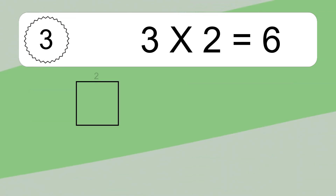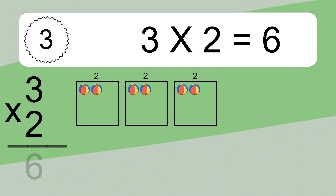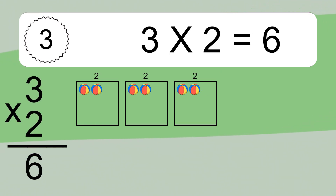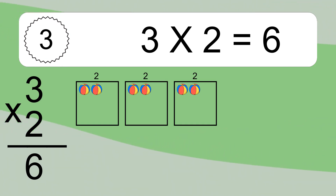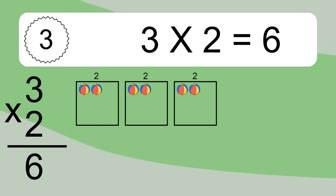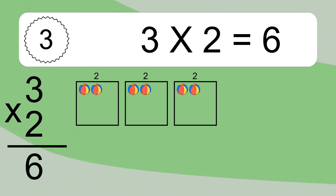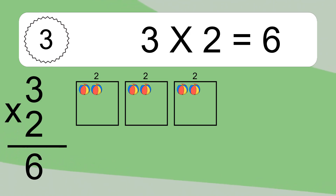3 times 2 equals what? 3 times 2 equals 6. We have 3 boxes, and each box has 2 colorful balls inside. If you count all the balls in all the boxes together, you will have 3 times 2 balls. This equals 6 balls.